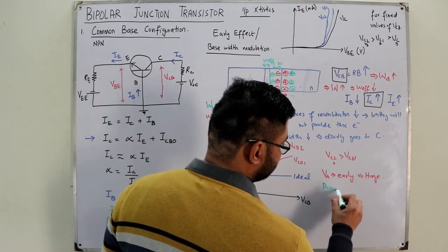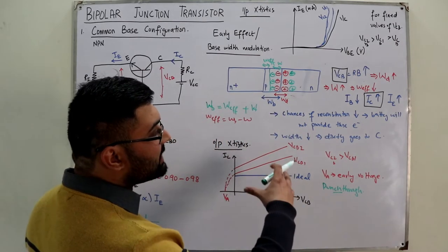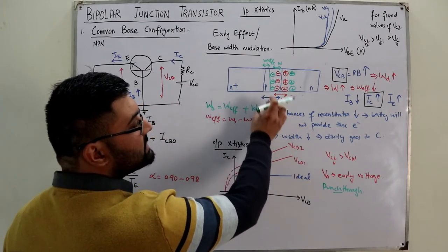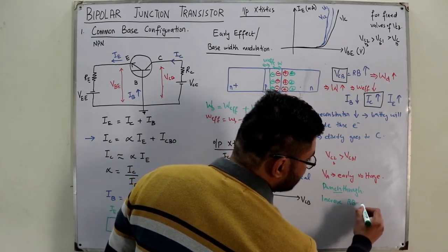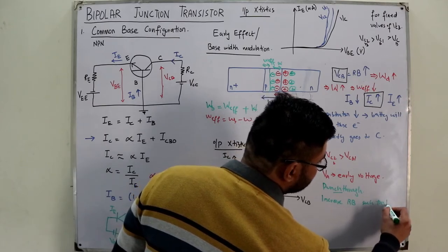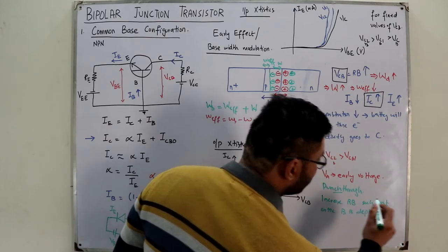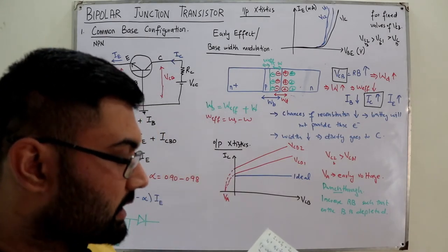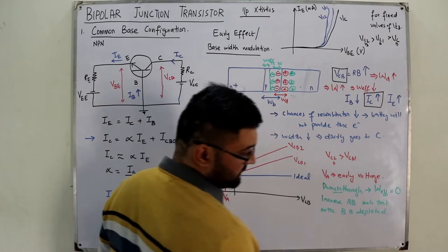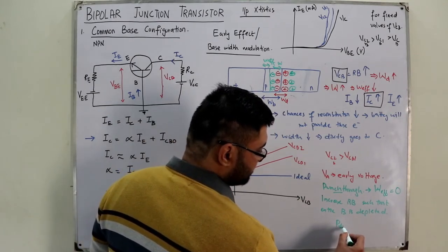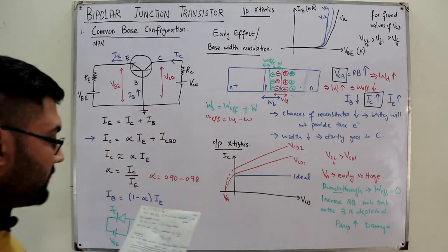Punch-through occurs when you increase the reverse bias voltage to such a level that the entire base width is depleted of free charge carriers. This should not occur — when it does, W_effective becomes approximately zero. In that case, the power dissipation would be very large and it will damage your device.